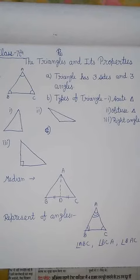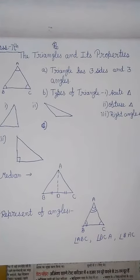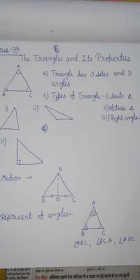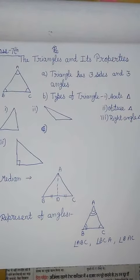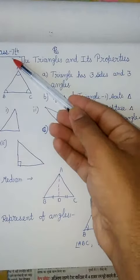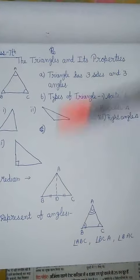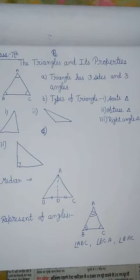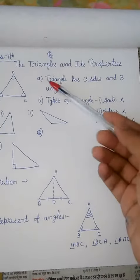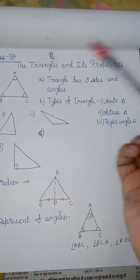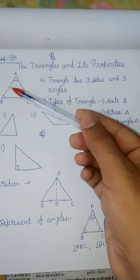Welcome students to our online classes. In this video we are discussing triangles and their properties. This video is for class 7, but properties of triangles are used in other classes also. First property is that a triangle has three sides and three angles.